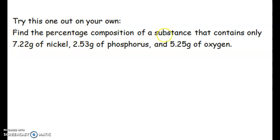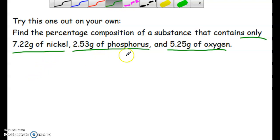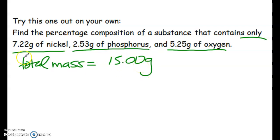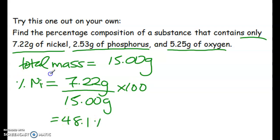Give this one a try: find the percent composition of a substance that contains only 7.22 grams of nickel, 2.53 grams of phosphorus, and 5.25 grams of oxygen. You should notice you were not given the total mass. Because you have the individual elements, you can add them up to find the total mass: 7.22 + 2.53 + 5.25 = 15.00 grams. For nickel: 7.22 g divided by 15.00 g, times 100 = 48.1% nickel.